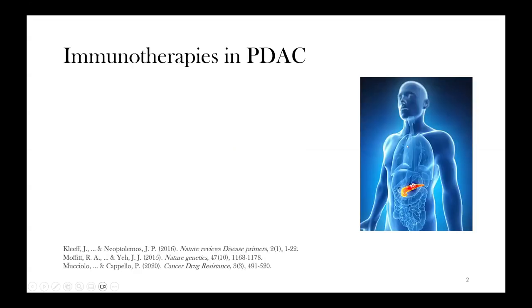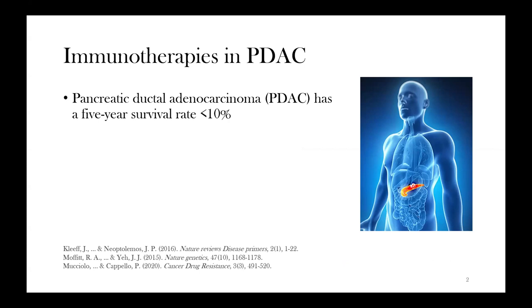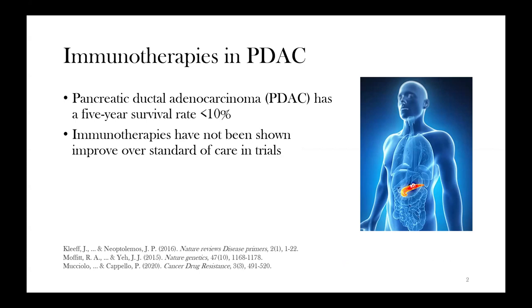There are a few reasons to focus on this topic. I'm specifically interested in immunotherapies and why they haven't worked in pancreatic cancer. PDAC has a very poor survival rate of around 10%. Immunotherapies that have worked really well in some cancer types, like lung cancer, just haven't worked over the standard of care in clinical trials in PDAC, and the reason for this is still a mystery.